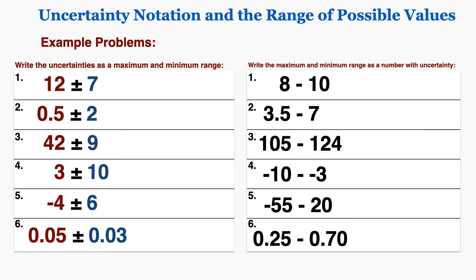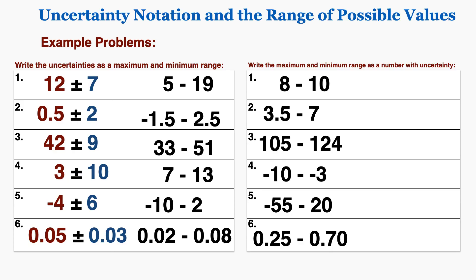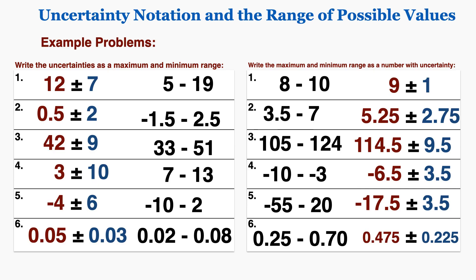I'm going to close the video with example problems where we write uncertainties as a maximum and minimum range, and write the maximum and minimum range as a number with uncertainty. Remember those two things mean the same thing — they're just two different ways of recording it. And that's what you have to know about the basics of uncertainty notation and the range of possible values.